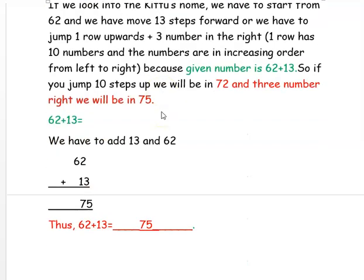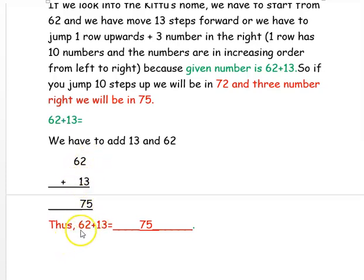We can also find this using addition: 62 plus 13 — 2 plus 3 is 5, and 6 plus 1 is 7 — so 62 plus 13 is 75.